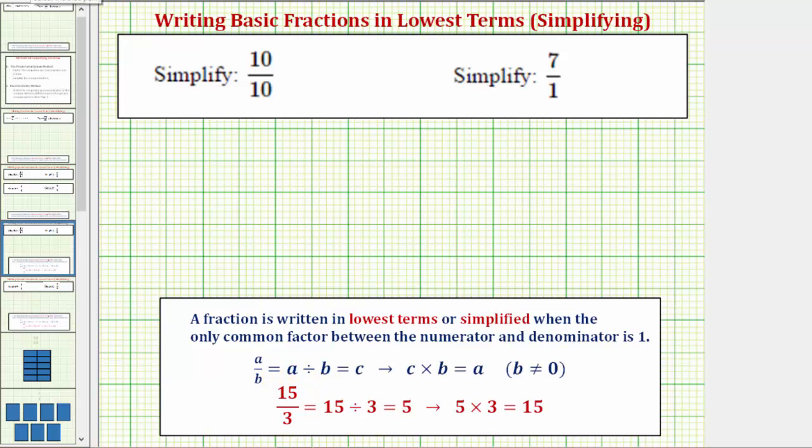Because our first fraction is 10 tenths, 10 tenths is equal to 10 divided by 10, which equals one. So the given fraction simplifies to one.